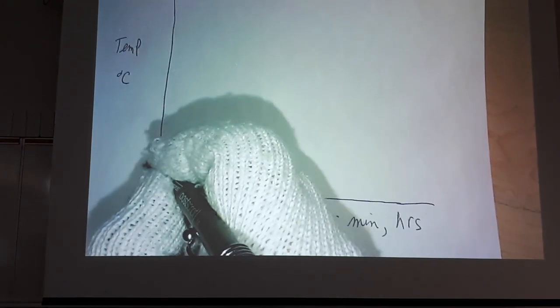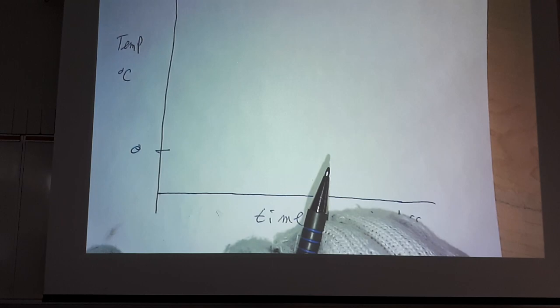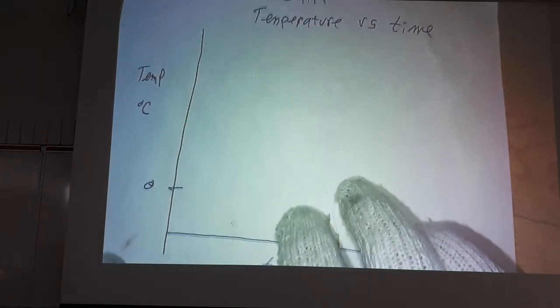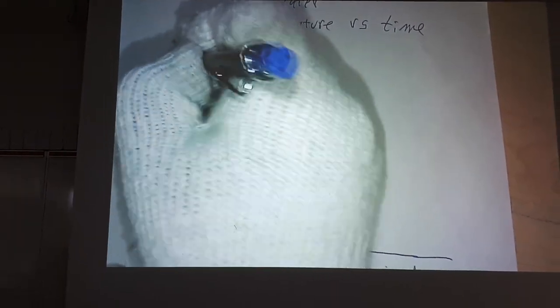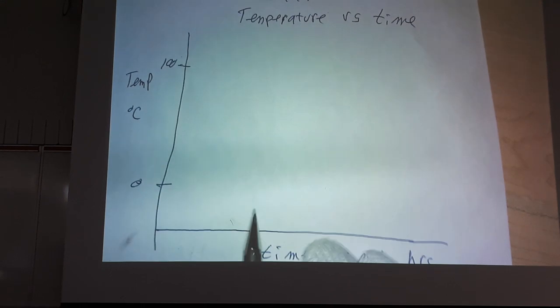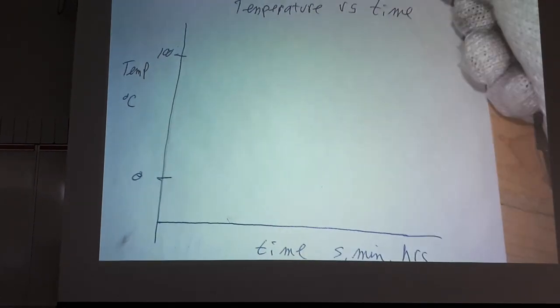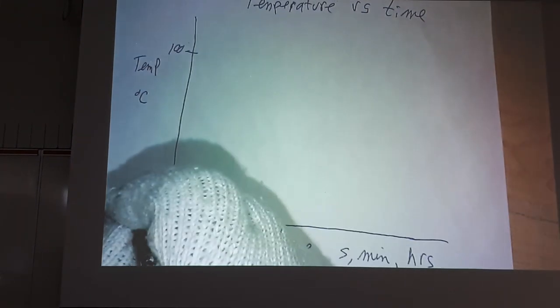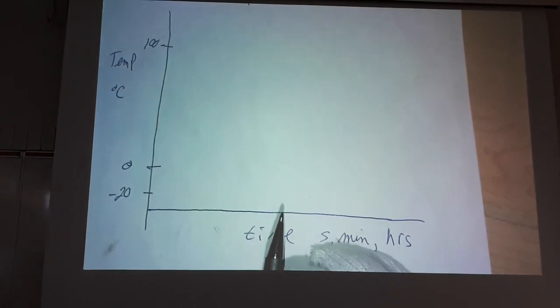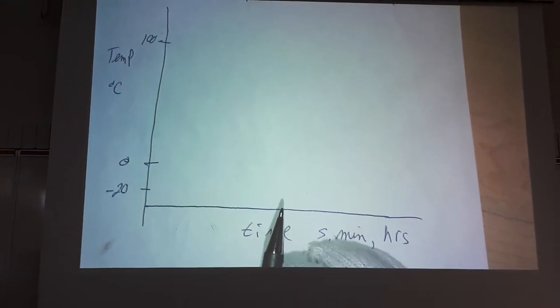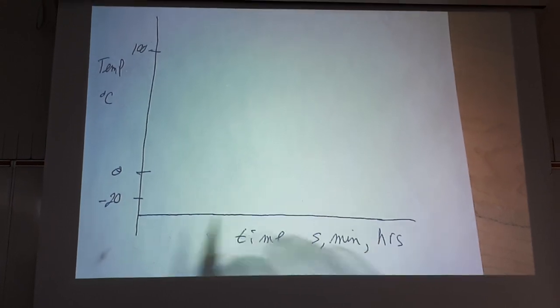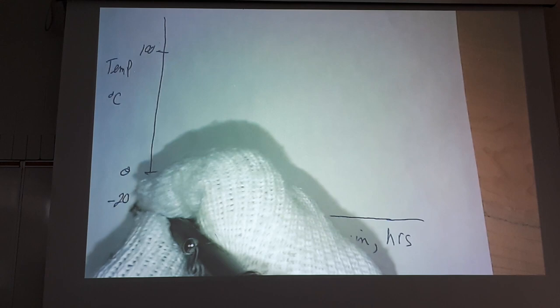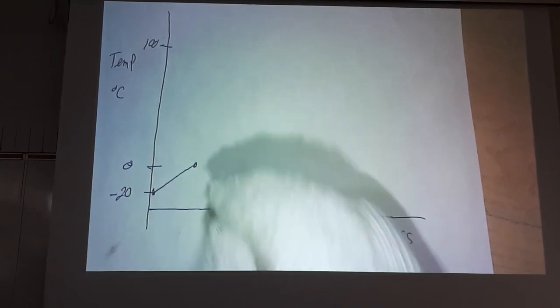Over here on the left, we're going to go to zero degrees Celsius, the freezing point of water. And up at the top, I'm going to put it at 100 degrees Celsius. If I had an ice cube, take this ice cube out of the freezer, it's going to start down here somewhere, say, minus 20 degrees Celsius. And as I add heat to this ice cube over time, I'm going to measure the temperature of the ice cube. It's going to start to rise. It's going to eventually hit zero degrees.